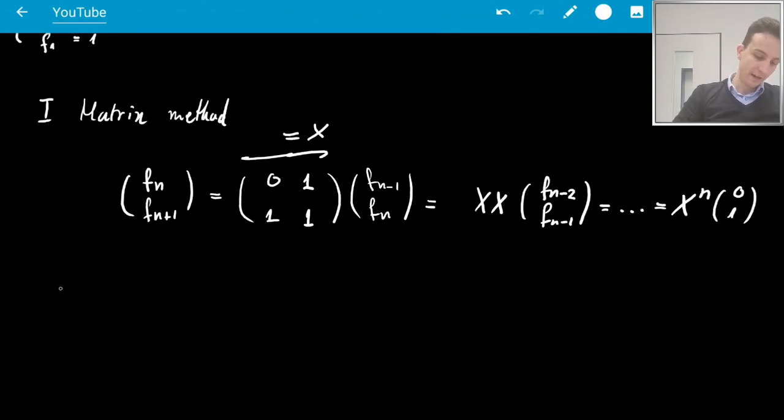So what is x to the n? Well, x to the n is, as you can see, not a diagonal matrix. But if it were diagonal, the power would be very easy to take, right? Because suppose we have a d that's like lambda 1, lambda 2. Then d to the n is just lambda 1 to the n, lambda 2 to the n.